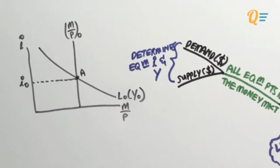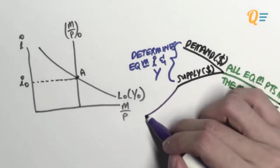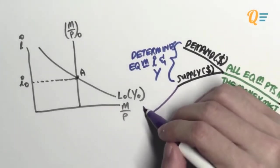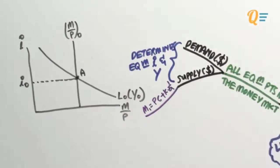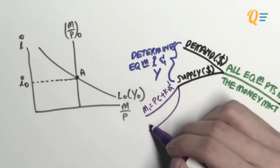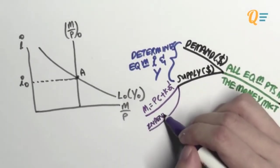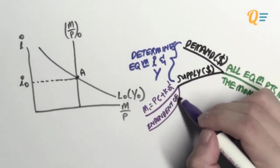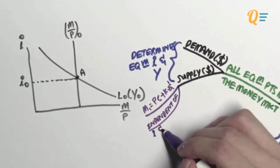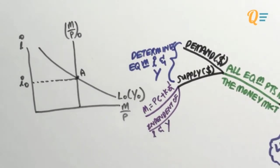From the previous video, we learned that the supply of money is actually M1. M1 is that slightly broader definition of money, which is public cash plus K times the money multiplier. As you can see, the money supply is actually independent of interest rates and income. That is why it is a vertical straight line.